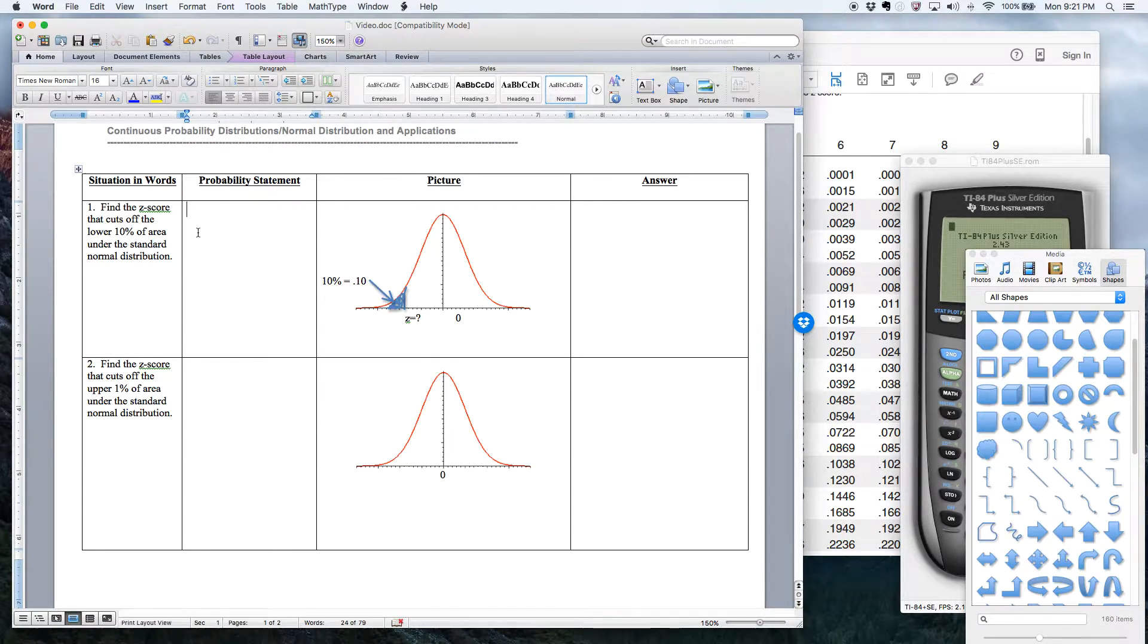All right, now the big question is what is this z-score? So what z-score do I have to put right there to cut off that lower 10%? So now it's a probability statement, it's a little odd to write. The probability that x is less than some z-score, and I know the answer, is 10%. We're solving for that value the probability that x is less than z equals .10.